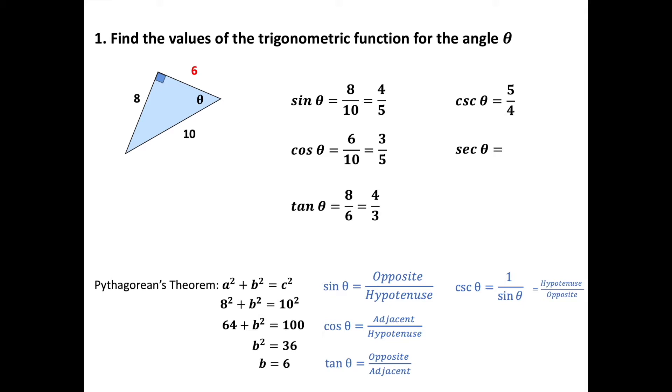The secant is the same thing but it's in relation to cosine. Secant is hypotenuse over adjacent. So all we're going to do is we're going to take this cosine right here and flip these two. Instead of 3/5 it will be 5/3.